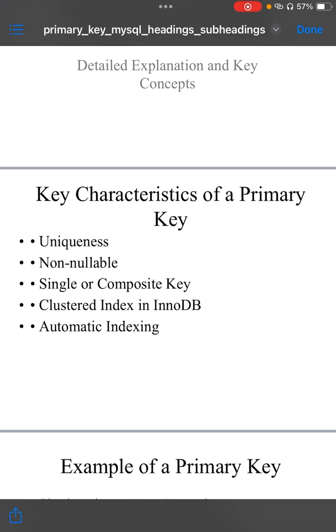Few key characteristics of primary key. First is uniqueness. A primary key ensures that each row in a table has a unique identifier. No two rows can share the same value in primary key columns, which prevents duplicate records.